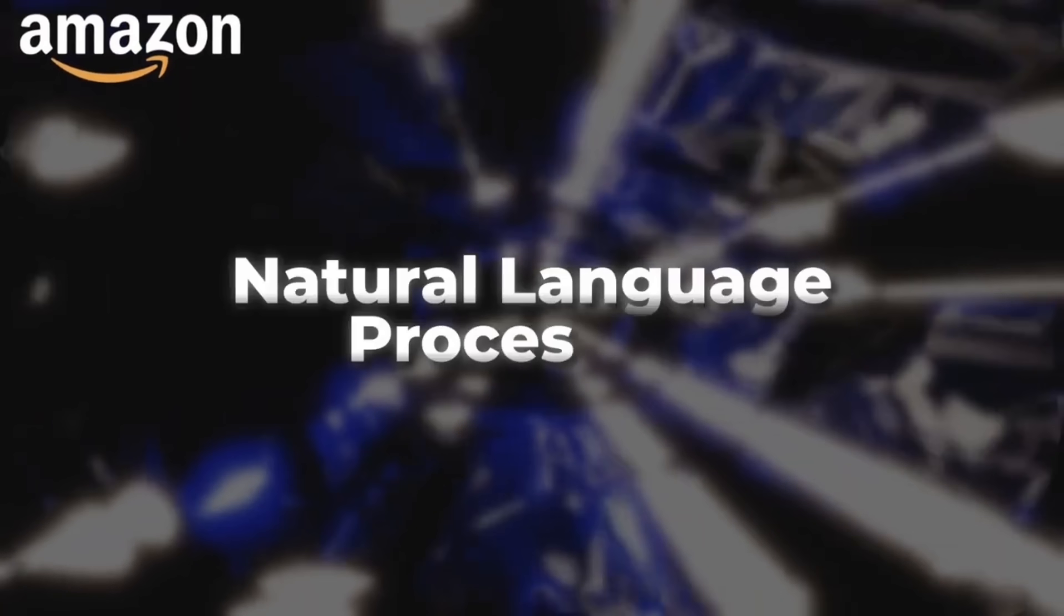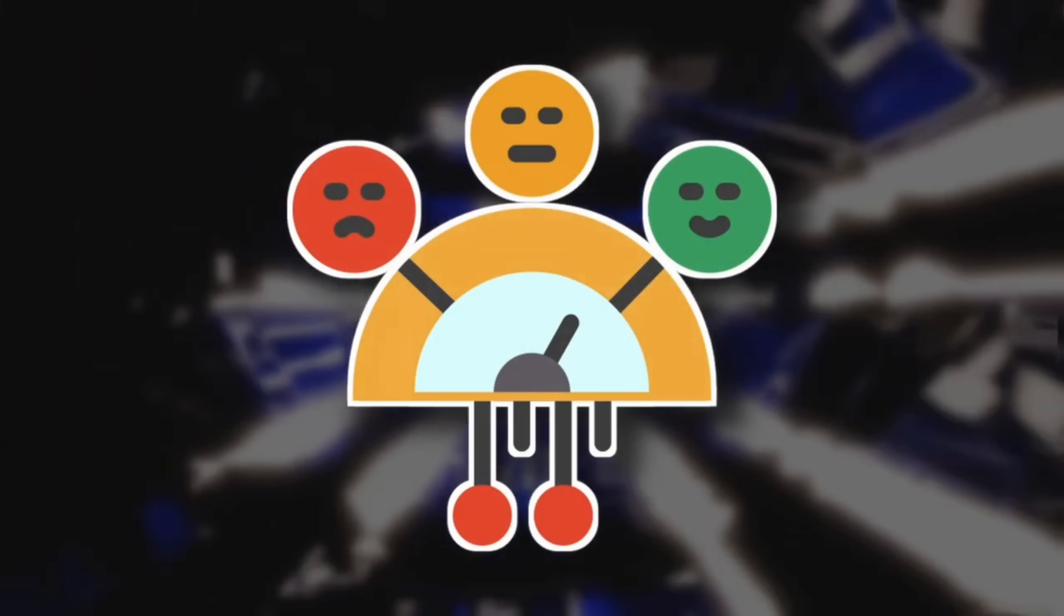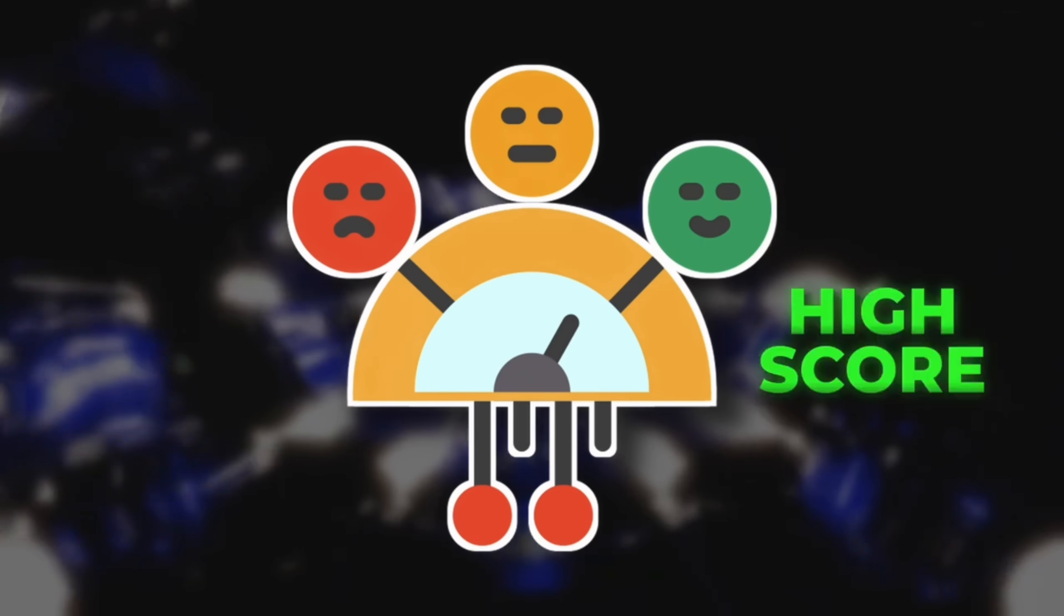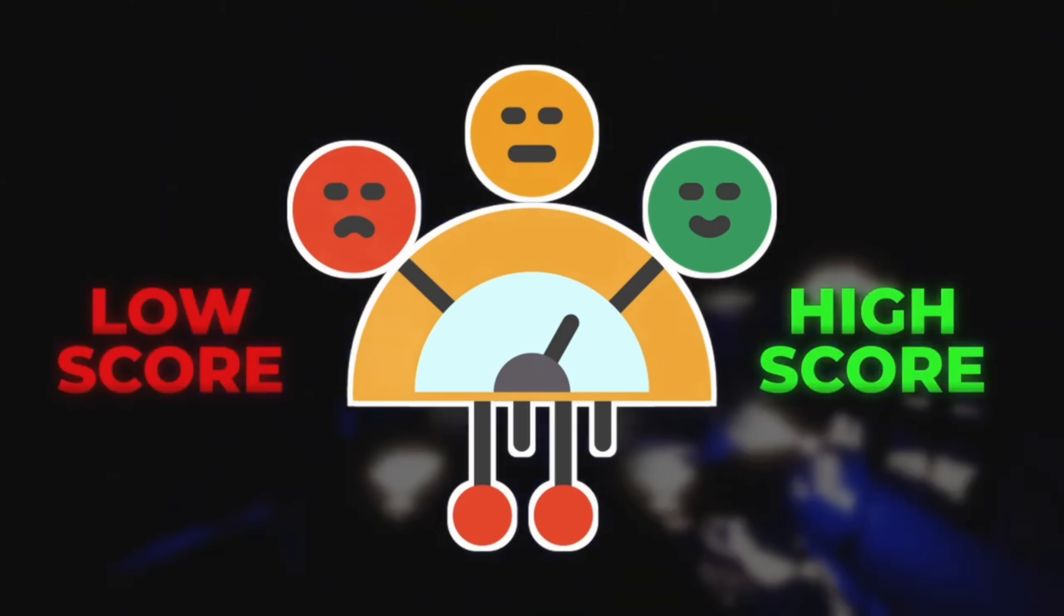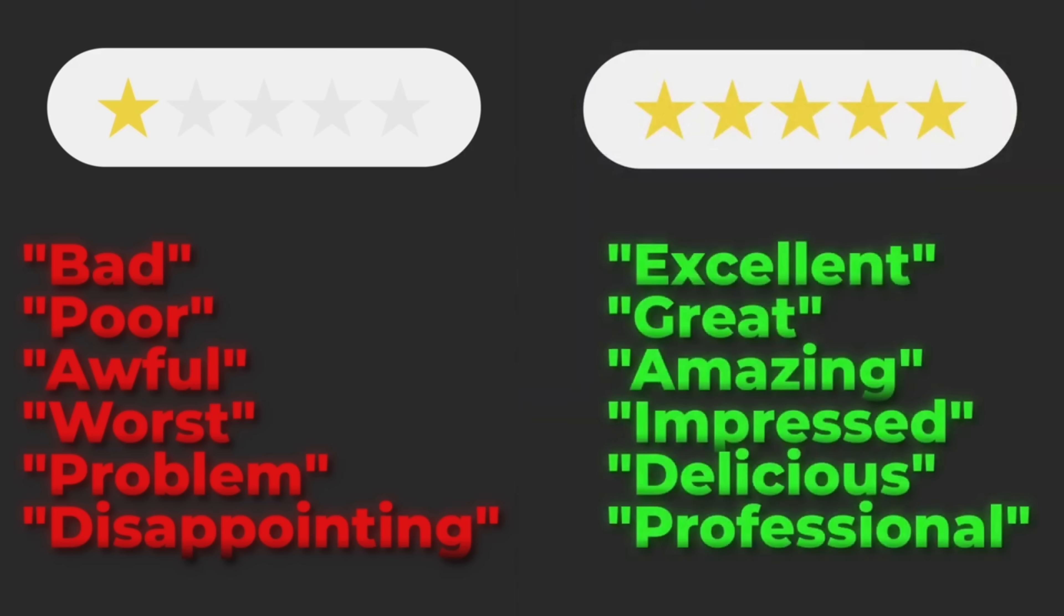For example, say we were on Amazon looking at reviews. We can use a natural language processing technique called sentiment analysis to assign an objective score to how positive or negative the words in the review are. And we can objectively tell that one-star reviews consistently use more negative words, while five-star reviews consistently use more positive ones.